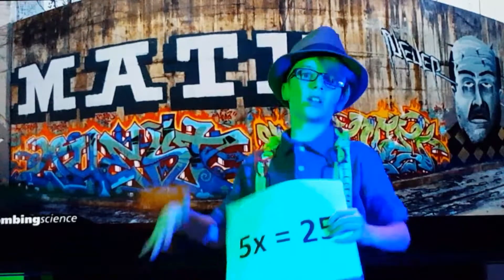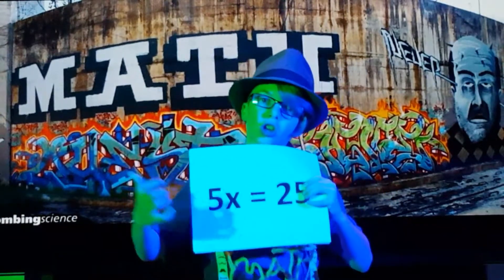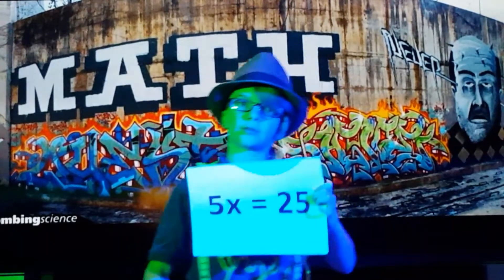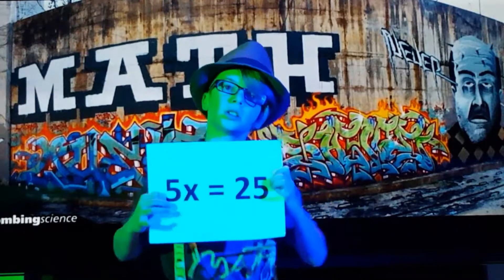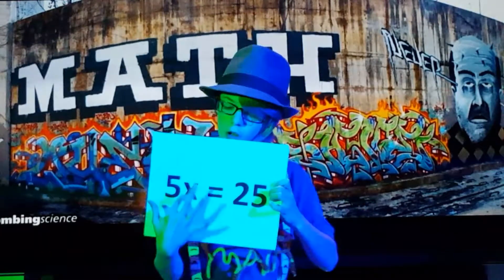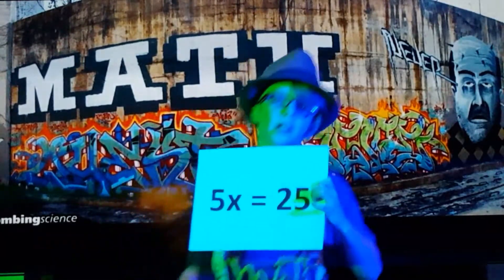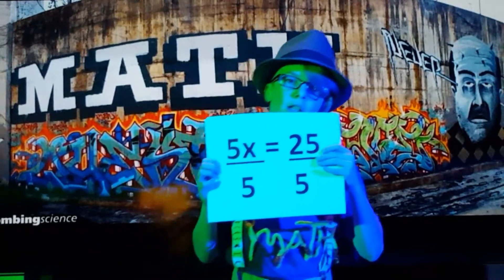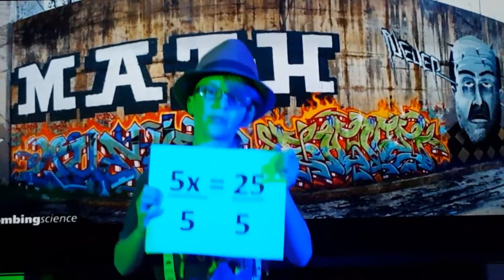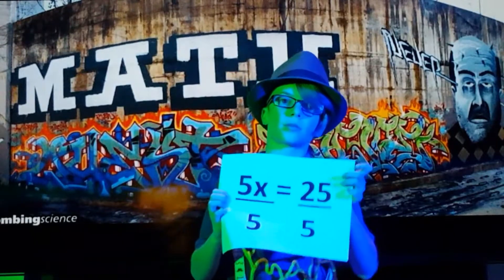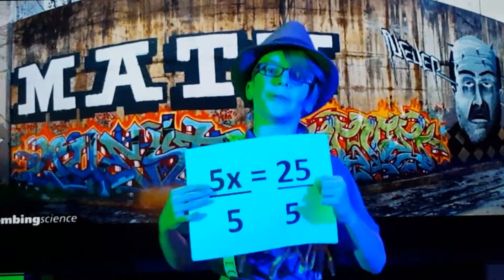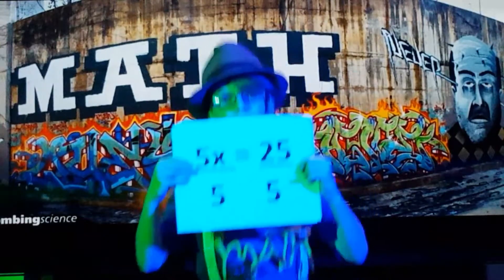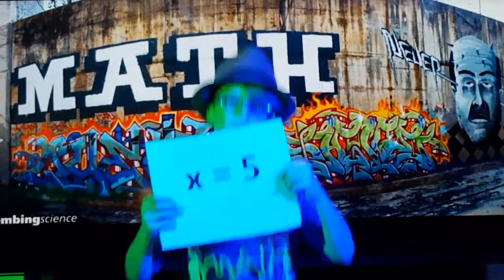Start with the example 5x equals 25. The first side multiplies, so change it to divide. Divide both sides by the number 5, because if you do it to one side, you've got to do it to the other. That gives you x equals 5. Give the rule to your mother.